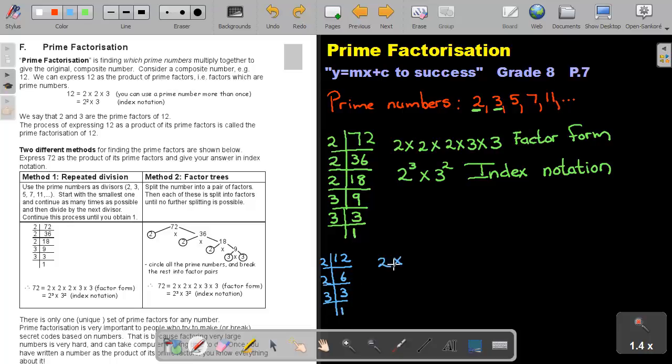Continue this process until you obtain a 1. So that will be 2 times 2 times 3. And again, don't forget that we will call this factor form after we did prime factorization. And this, 2 to the power of 2 times 3, we will call index notation. And that's what I showed you there. I took 12, did prime factorization, and wrote it in factor form and then in index notation.